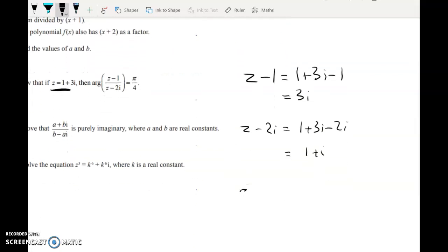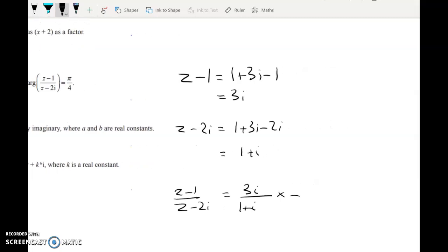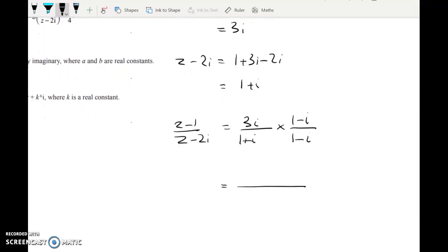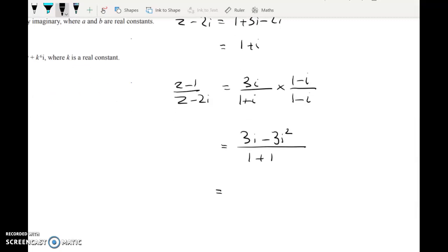So z minus one over z minus two i is three i over one plus i. And we can multiply by the conjugate over the conjugate. In the denominator, we're going to get one plus one. And in the numerator, we're going to get three i minus three i squared. So you can see where this is going. That gives me three plus three i divided by two.